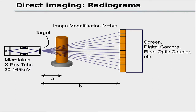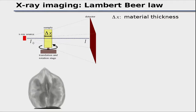In direct geometric imaging, we have an X-ray tube with a small focus spot; X-rays travel straight through the material and hit a camera. Because of this cone-beam geometry, we get magnification: by moving the object closer to the source or closer to the camera, we control magnification without any lenses. This classical setup — used in medical chest X-rays and dental X-rays — produces what is called a radiogram.